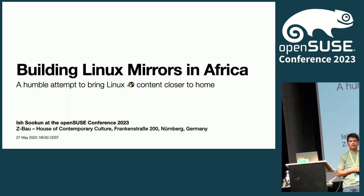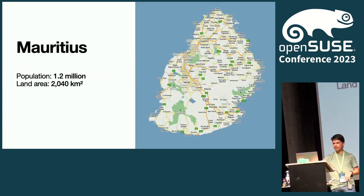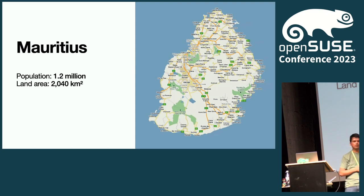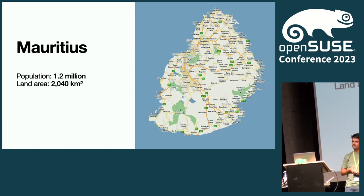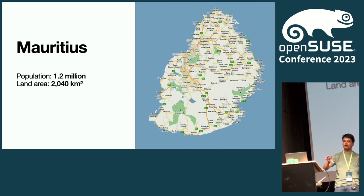I am a systems architect in a Mauritian company called La Centrale Limited. Mauritius is where I'm from — it's a small country with a very small population of 1.2 million people, barely 2,000 square kilometers. I'll explain shortly why I'm giving you this information.